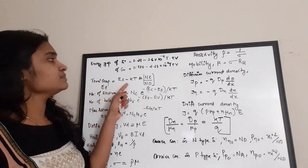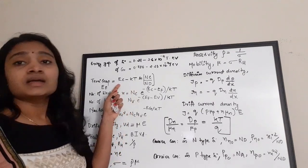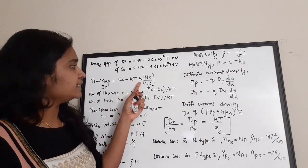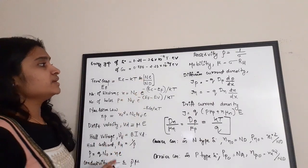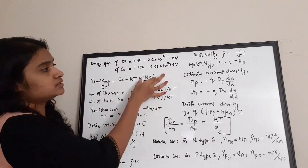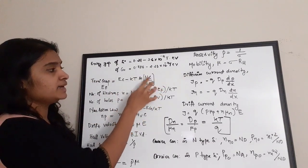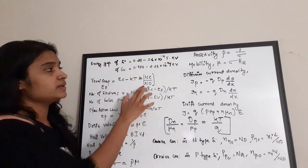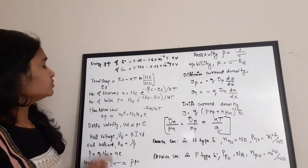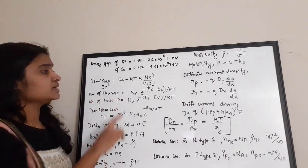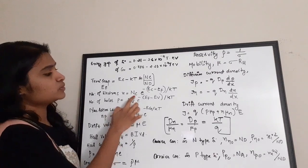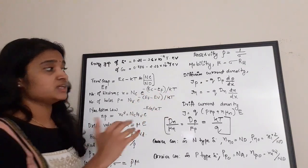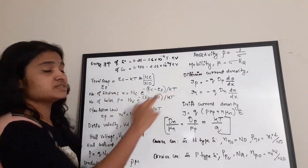The Fermi level Ef is given by: Ef = Ec − kT × ln(Nc / Nd), where Ec is the conduction band energy level, k is Boltzmann's constant, T is temperature, Nc is the number of carriers in the conduction band, and Nd is the donor concentration. The number of electrons n = Nc × e^(−(Ec − Ef) / kT).